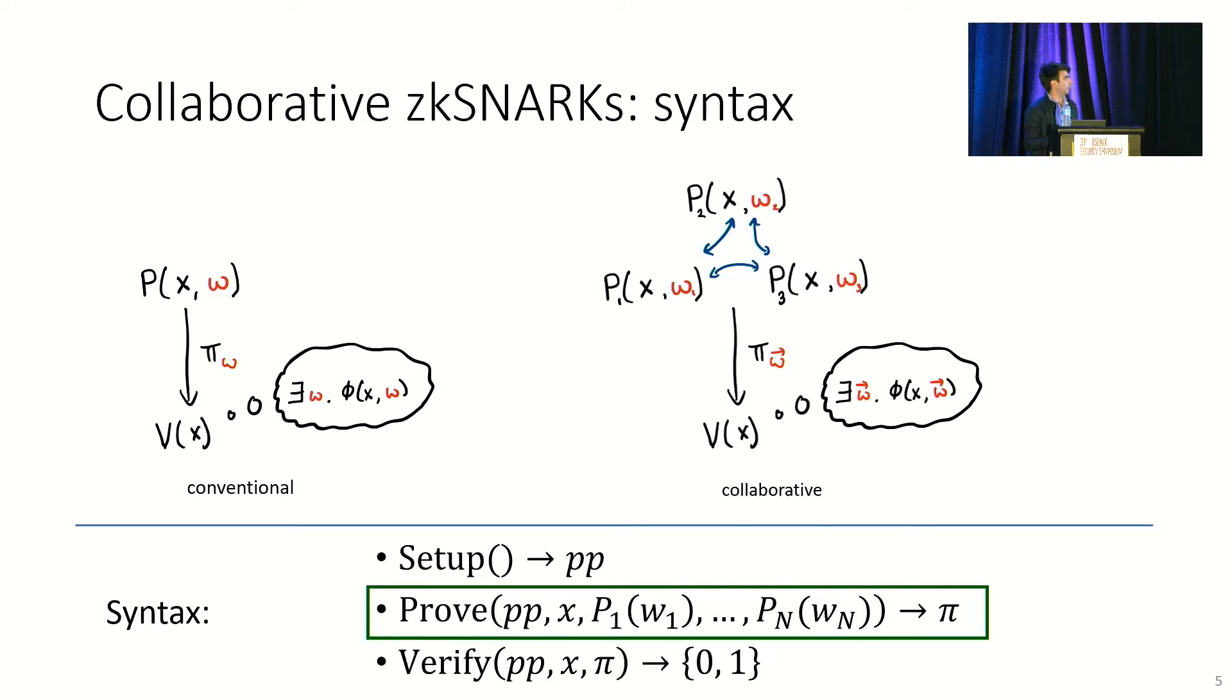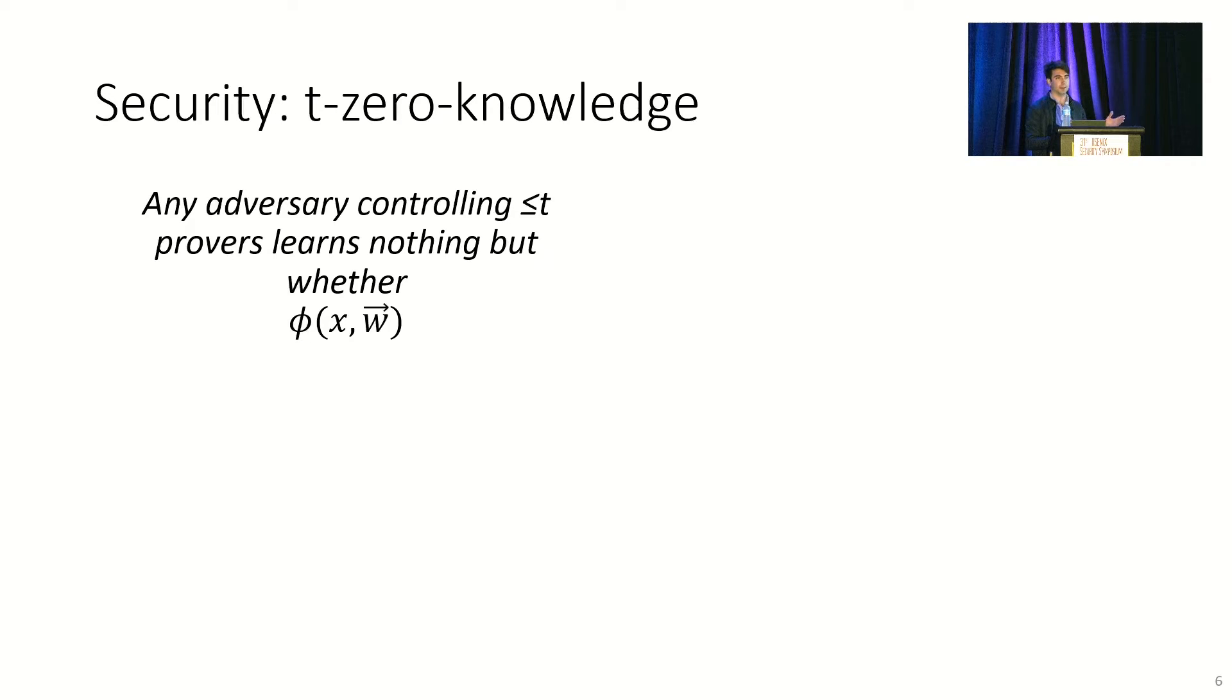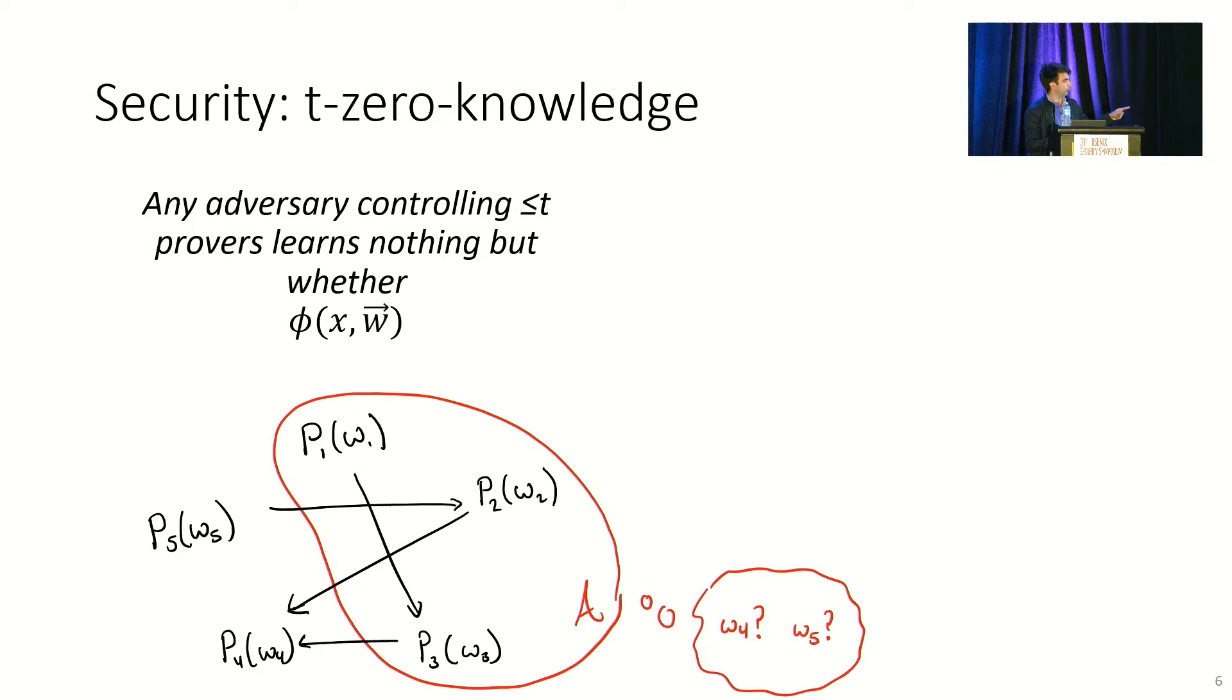So this is the syntax. What about security? Well, I'll just talk about one security property today, T0 knowledge. You see, in the collaborative setting, you don't just have to worry about the verifier learning secret information that it shouldn't learn. You also need to worry about other provers learning secret information during the proof construction. T0 knowledge rules this out. Informally, it says that an adversary who controls at most T provers should learn nothing about the other witnesses beyond the fact that the witnesses are collectively valid. Pictorially, this means that if there are five provers, three of them are controlled by an adversary, and the protocol has 3-0 knowledge or better, this adversary shouldn't learn anything about witnesses four and five beyond the fact that the witnesses are collectively valid.